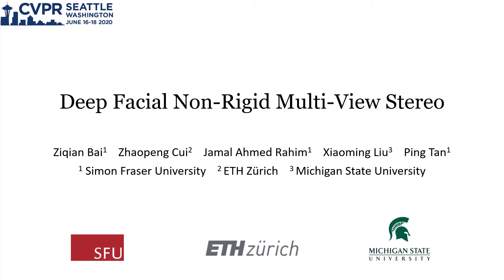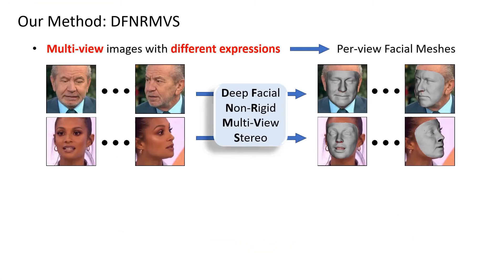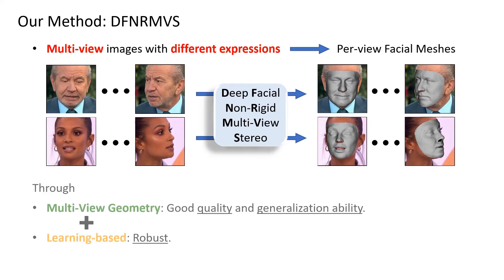In this paper, we propose an algorithm for non-rigid 3D face reconstruction. We estimate per-view facial meshes from multi-view images with different expressions. Our method is a novel fusion of traditional multi-view geometry and modern deep learning to leverage the best of both worlds.